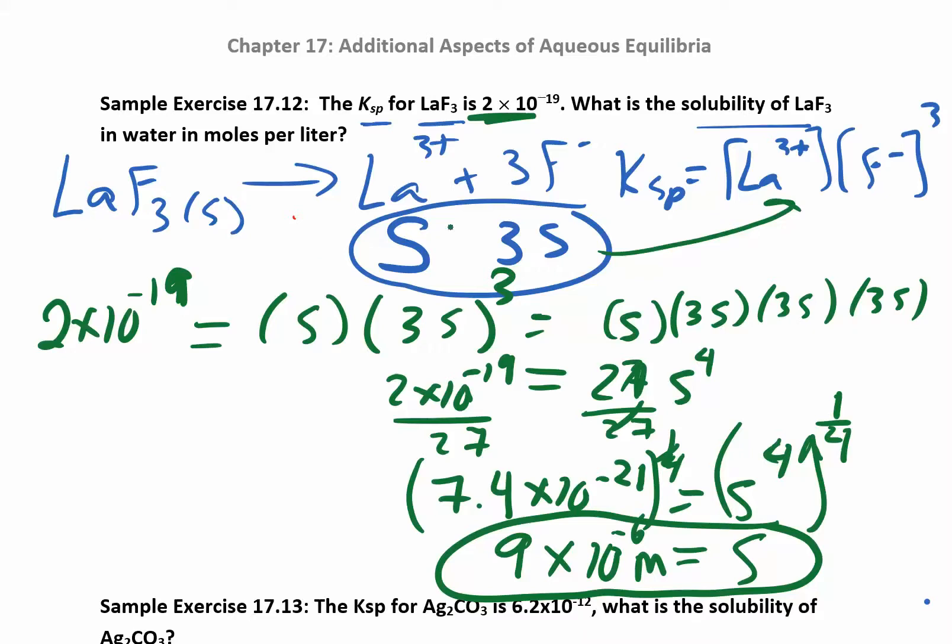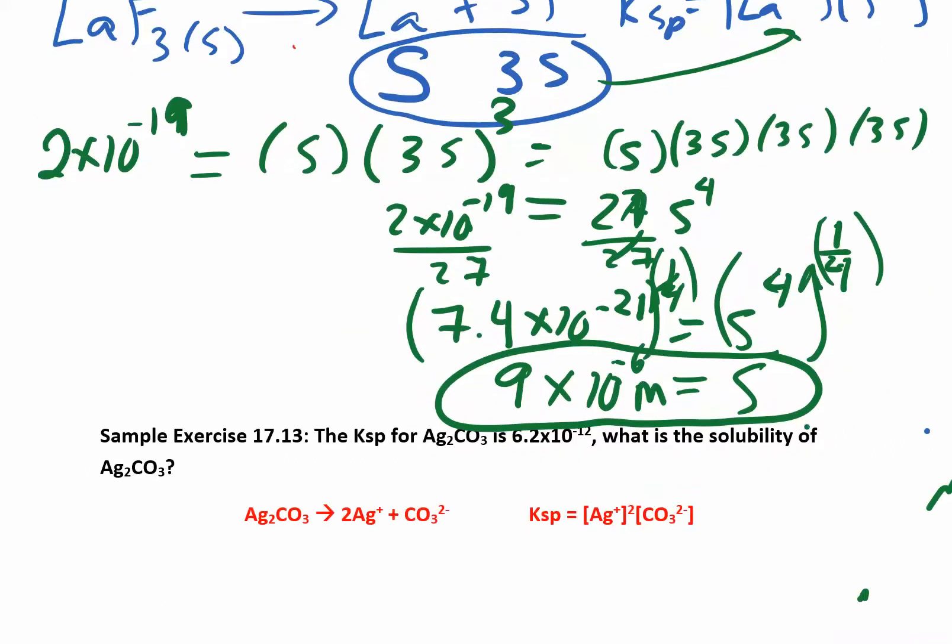So all we did in this problem is we wrote our reaction, and then I said for every one mole of my reactants I make one mole of the La³⁺, I make three moles of this guy. So this is s and this is 3s. So whatever the solubility is here of this solid, that's the same as the concentration of the ions I get here, and I'll get three times as many ions just because the stoichiometry. Then I take that, plug it into the KSP and solve for s. Be careful with the math down here. Make sure you try that in your calculator. You are raising this to the one-fourth power. You may need to put that in parentheses if you're getting something different.